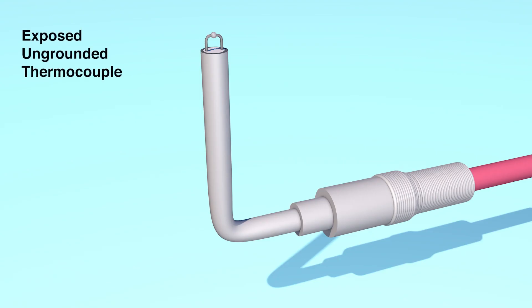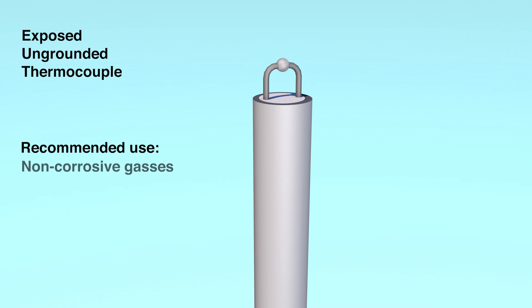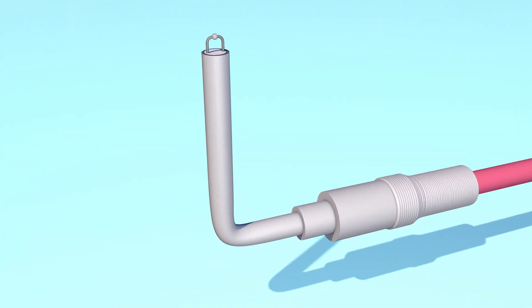Exposed junction thermocouples are recommended when measuring the temperature of non-corrosive gases where a fast response time is required. Exposed junction thermocouples are ungrounded by design.